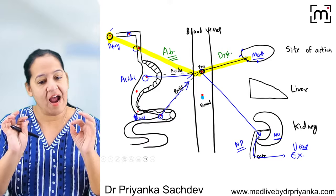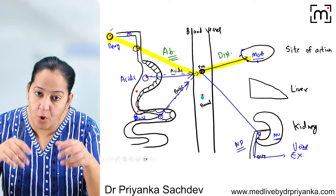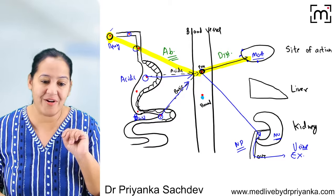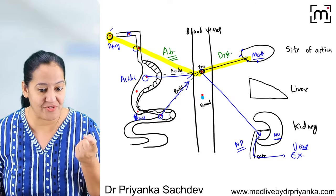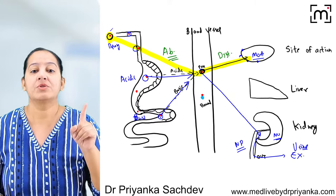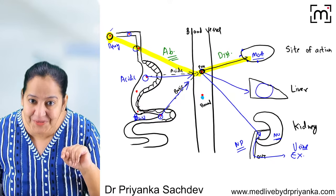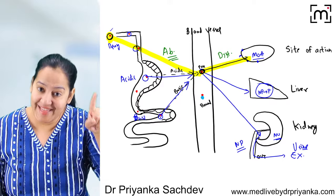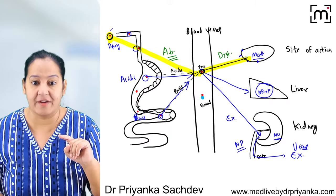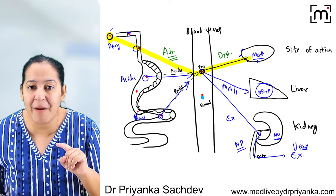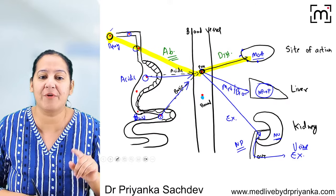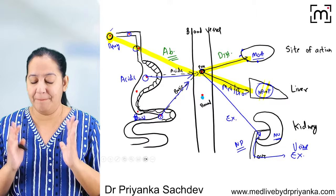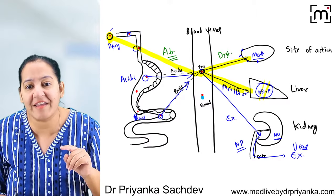There are two types of drugs — polar (water-soluble) and non-polar (non-water-soluble). Polar drugs dissolve in urine and get excreted. Non-polar ones crystallize. So the kidney tells the drug: first get converted to polar, then come back. The drug goes to the liver, where inside the hepatocytes, the non-polar drug gets converted to polar. This conversion is called metabolism or biotransformation, which takes place in the liver.